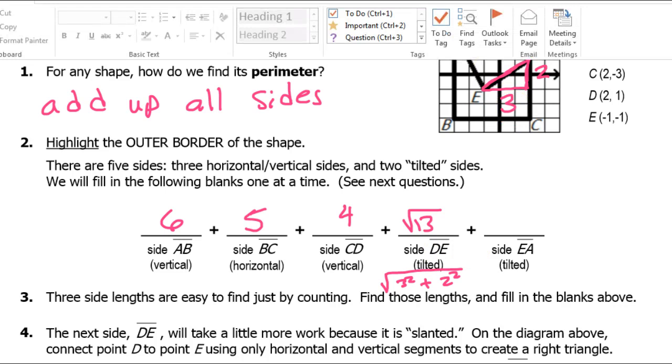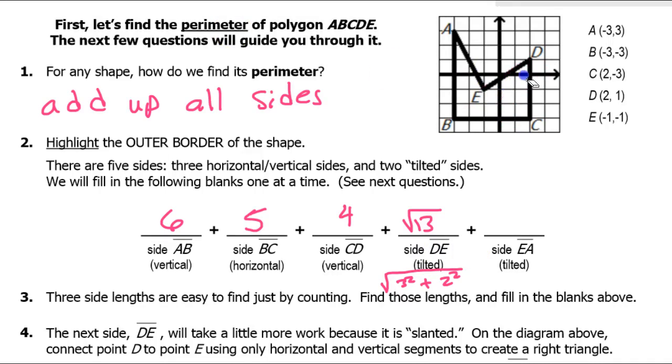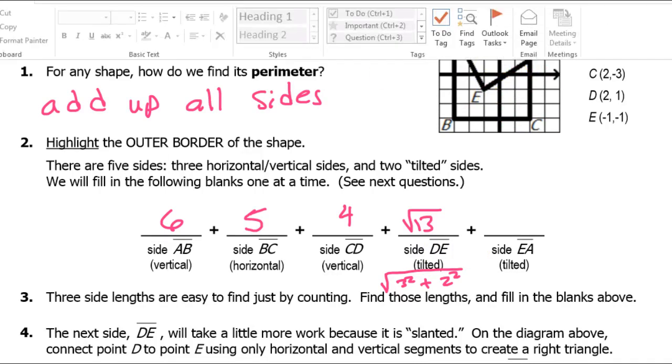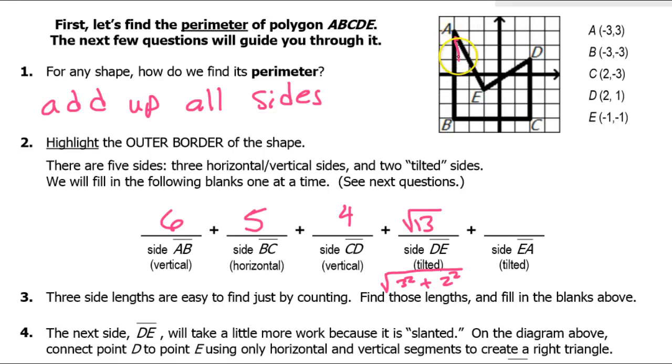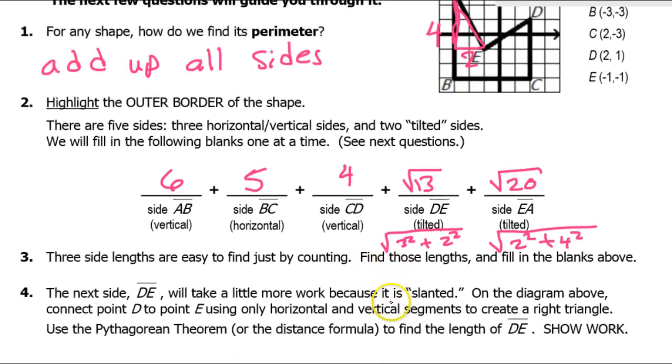And then similarly for EA we will also do the Pythagorean theorem as well. Alright, so for EA we make this little right triangle over here like this. Horizontally it's two. Vertically it's four. So this should be the square root of two squared plus four squared. That's 16 plus four that's 20. So that's going to be the square root of 20. So if we add all of these up that should be the perimeter.